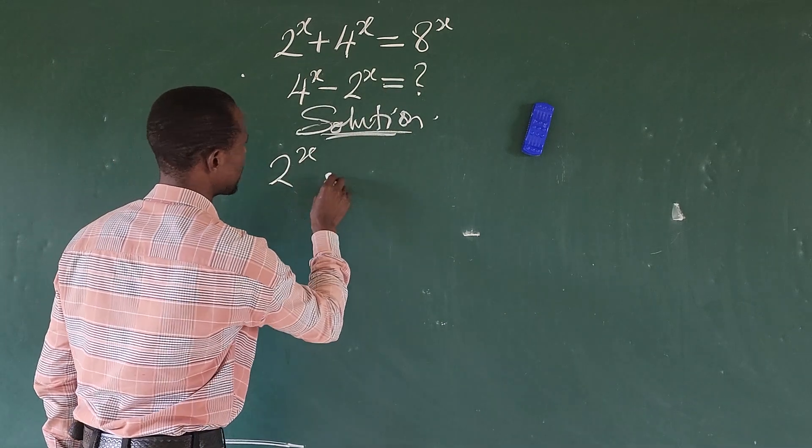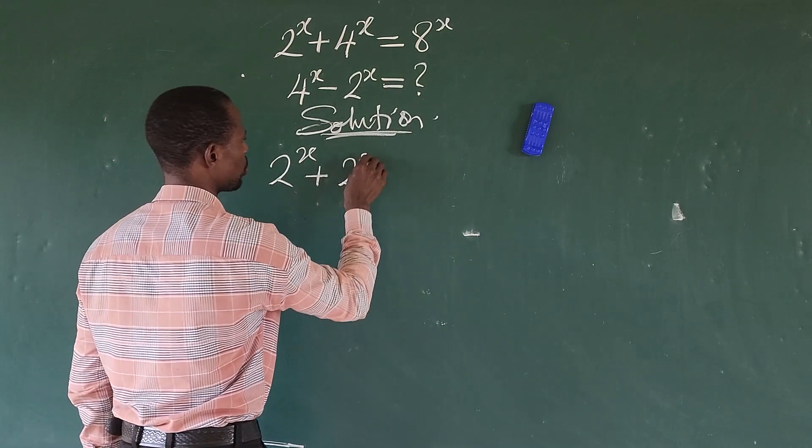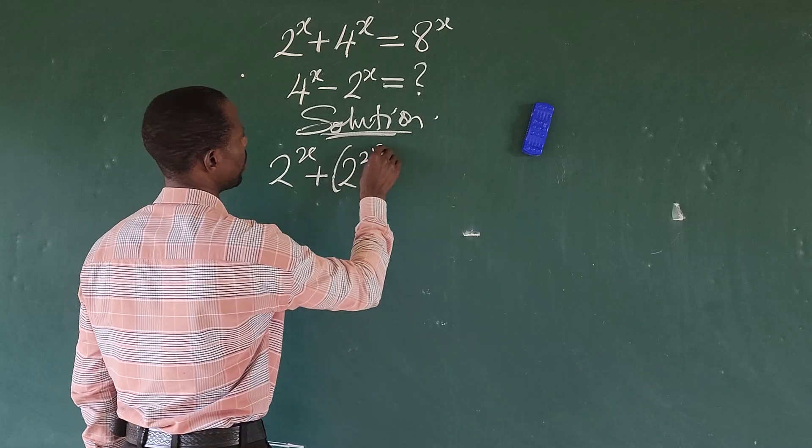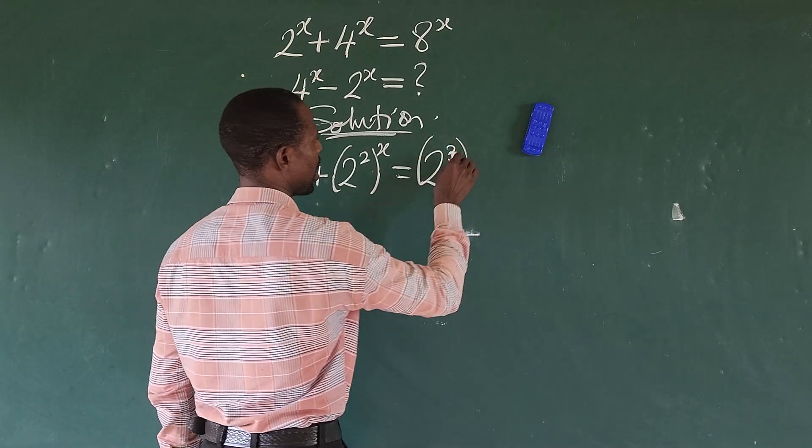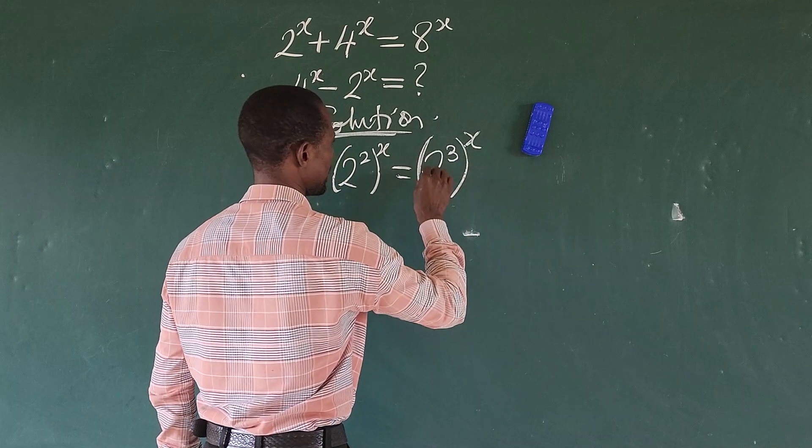So we're going to have here 2 to the power of x plus 2 to the power of 2 to the power of x equal to 2 to the power of 3 to the power of x.